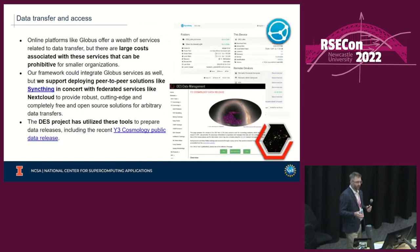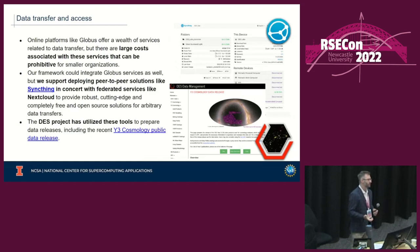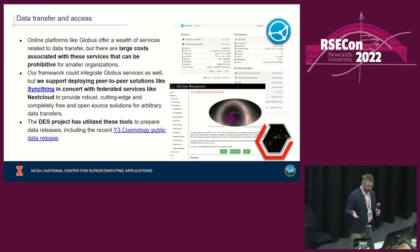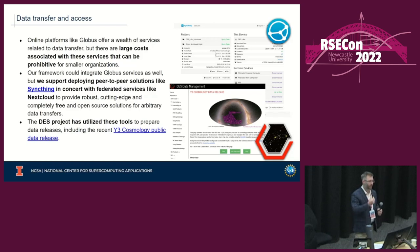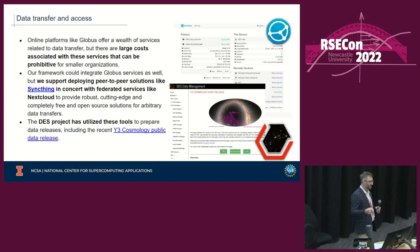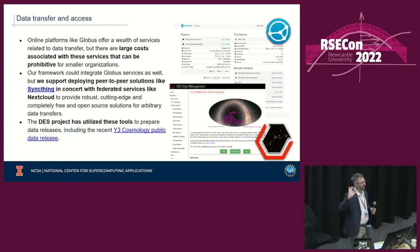While we're talking about moving data around, I wanted to mention our use of SyncThing. Centralized platforms like Globus offer a wealth of services for data transfer, but there are large costs that can be prohibitive for smaller organizations. SyncThing is a truly serverless peer-to-peer solution — you don't need it deployed to be useful. However, we deploy a persistent peer so our researchers can have large data capacity and an always-available peer, as you'd traditionally expect from a web service.